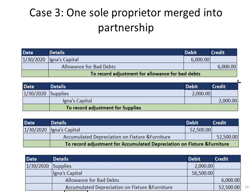For the sole proprietor's books, they should still be closed. The sole proprietor should do the closing entry — the link for that is provided since we already discussed closing entries. We now close all the balance accounts of Igna so the sole proprietorship is totally eliminated. In partnership formation, you can use new books or retain the book of the sole proprietor. If using new books, record all entries; or retain the books and just record the investment of Jane.